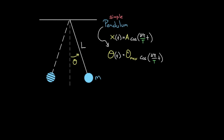Assuming the small angle approximation, what does the period of this pendulum depend on? One guess might be the mass. If we increased the mass, you might say it increases the inertia of the system — it's gonna be harder to move, more sluggish to accelerations, more difficult to change direction. That means it should take longer to complete a cycle, so the period should increase.